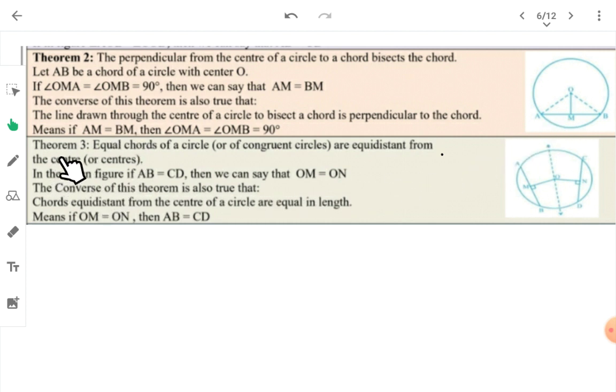Now let's come to theorem 3. Equal chords of a circle are equidistant from the center. We learned that equal chords subtend equal angles at the center. Now we learn that equal chords are equidistant from the center, meaning at equal distance. As given here, chords AB and CD are equal.